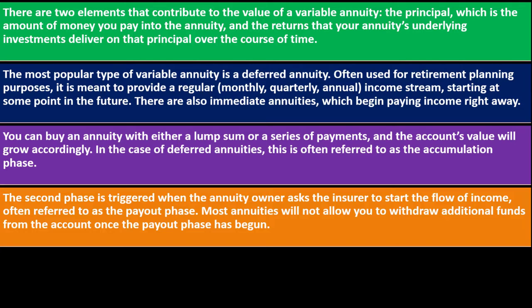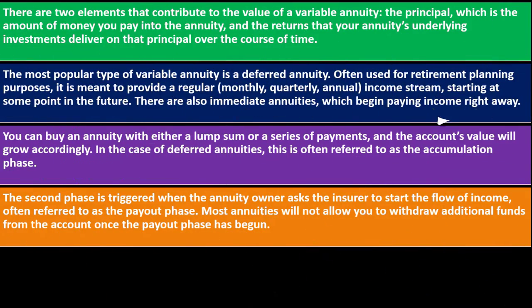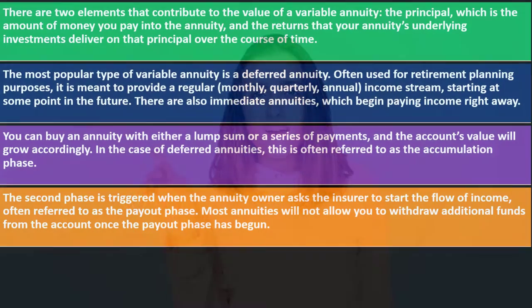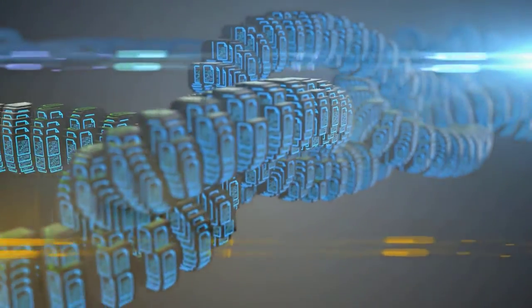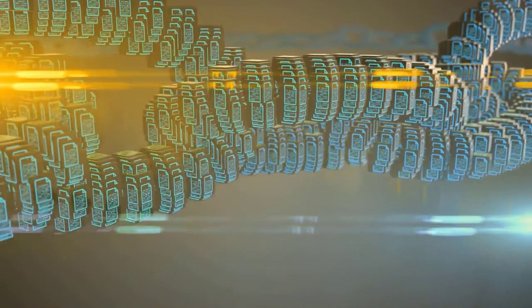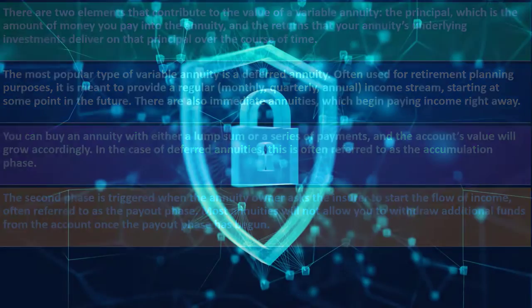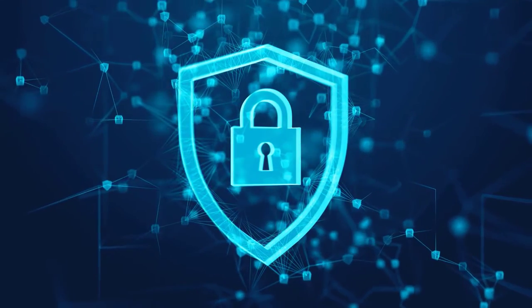The second phase is triggered when the annuity owner asks the insurer to start the flow of income, often referred to as the payout phase. Most annuities will not allow you to withdraw additional funds once the payment phase has begun. The money is locked in with the insurance company, which determines how much they'll earn on it and how much they'll pay you according to the contract — you can't access the money as easily as you could with stocks and bonds.